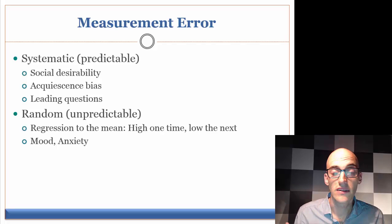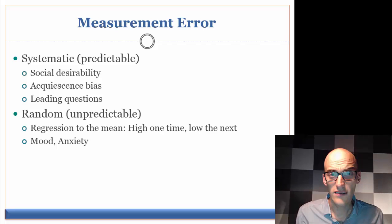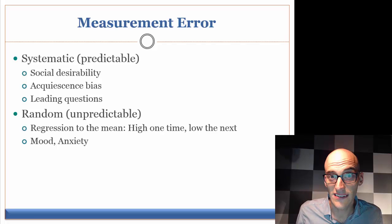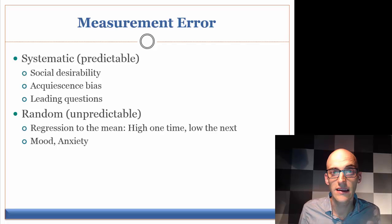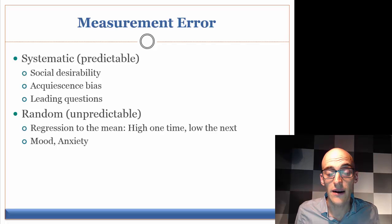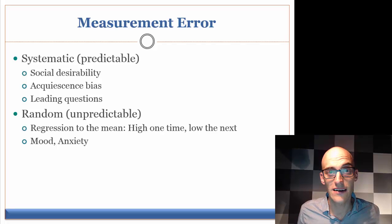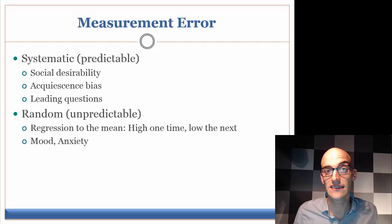You would need longitudinal measurement with several data points to ensure valid and reliable results. Random measurement error could also be just the person's mood. If you were doing a single system design and somebody came in after losing a job, getting into a car accident, or receiving horrible health news, that would be random measurement error. Just because their anxiety is really high one week doesn't mean your intervention isn't working — it could be something extraneous to the treatment itself.